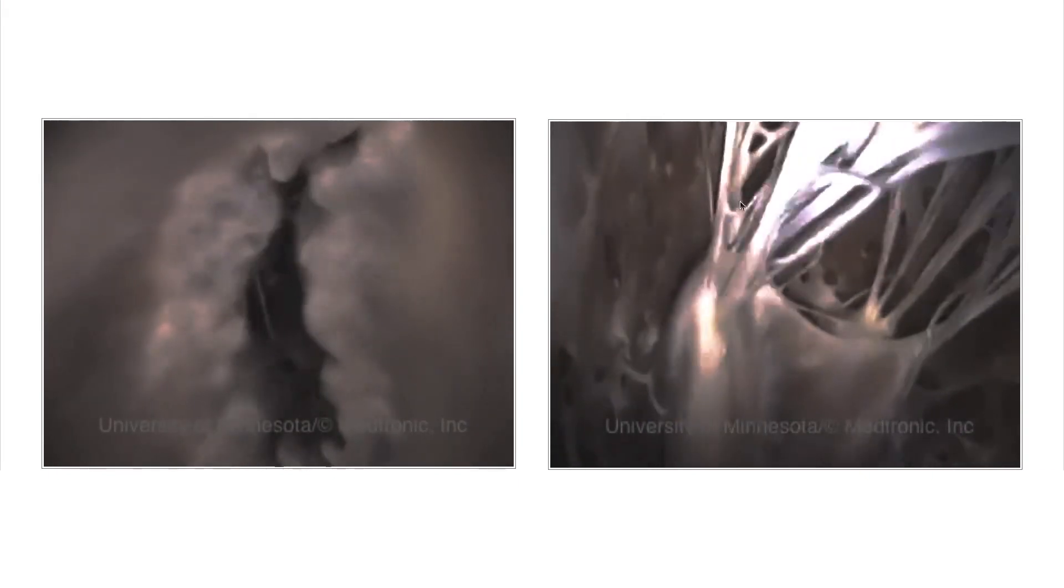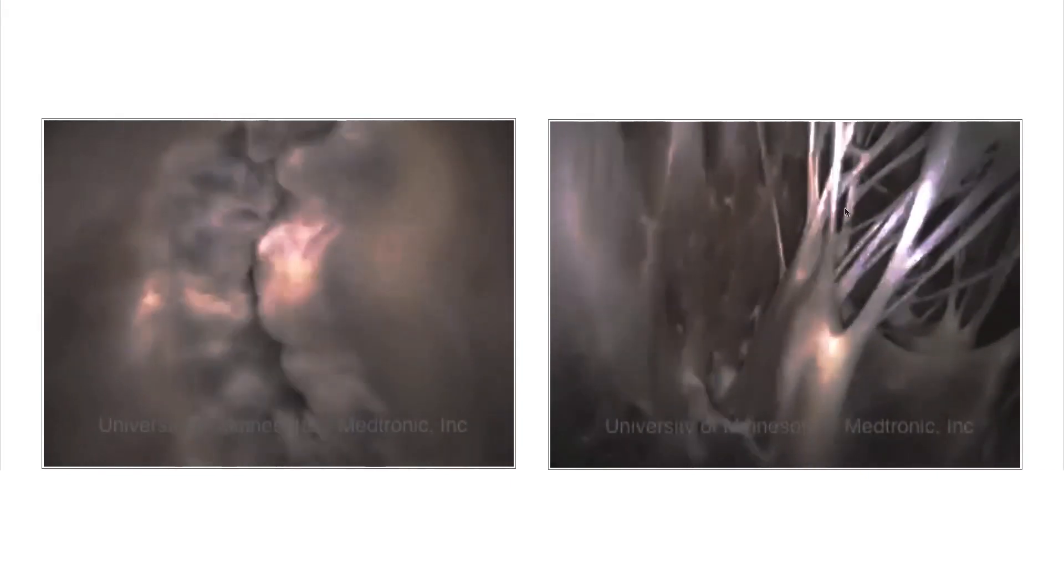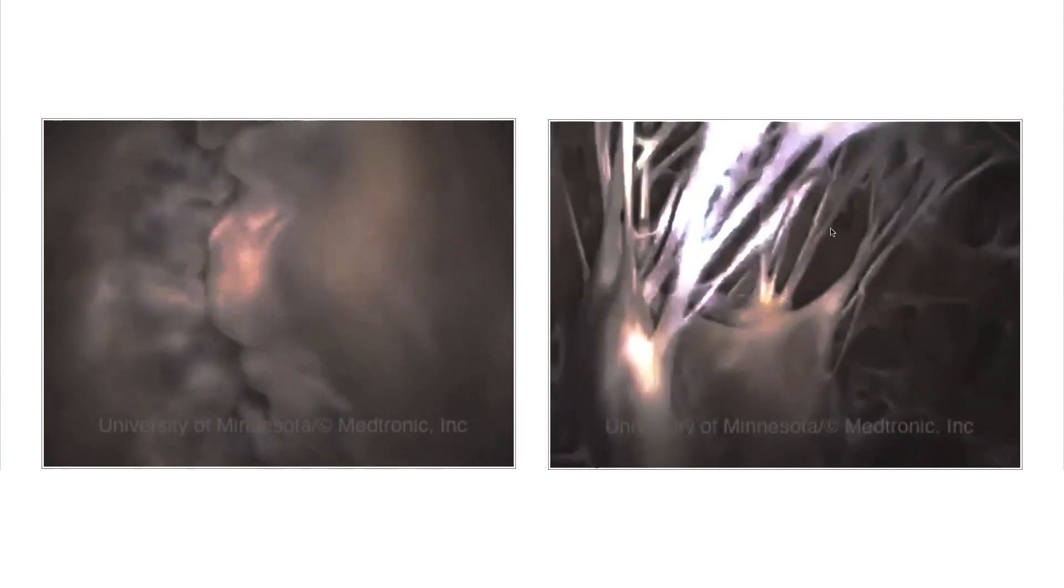You can appreciate how delicate these cordae are when you look at the mitral valve from the ventricular side. Here is the papillary muscle, and here you can see the cordal structures, which are actually relatively resistant and very strong.